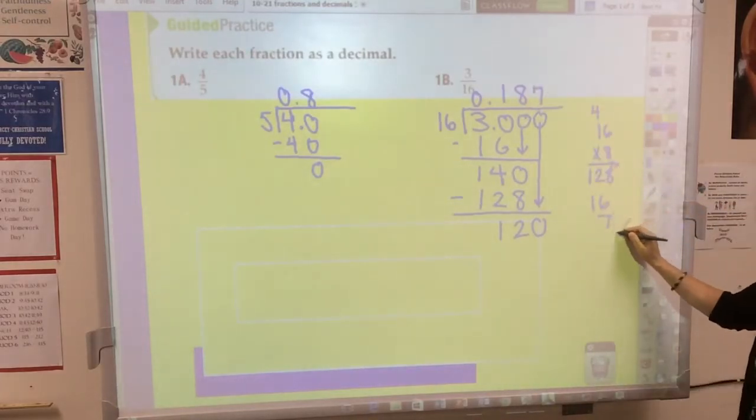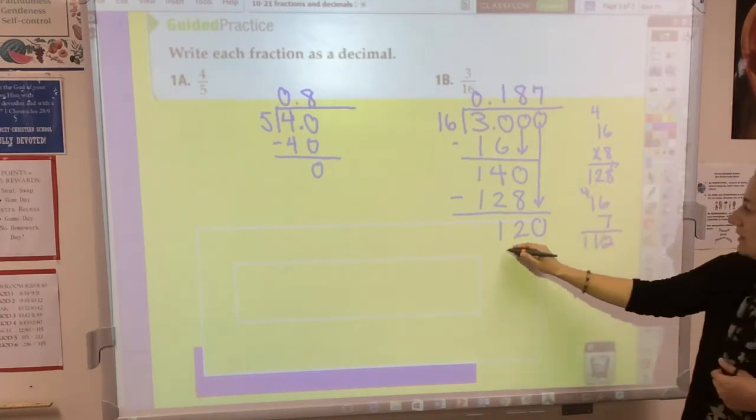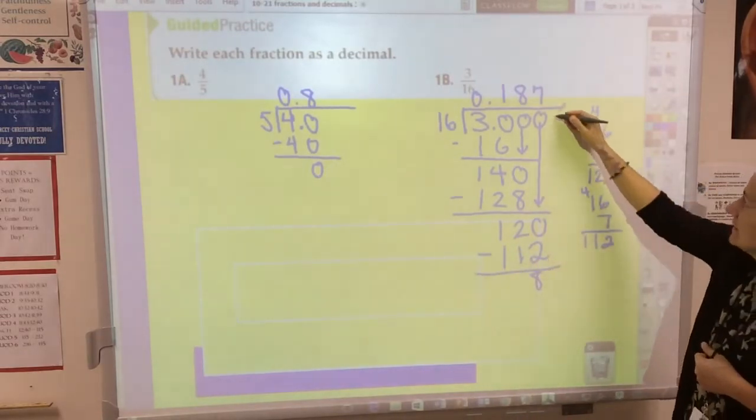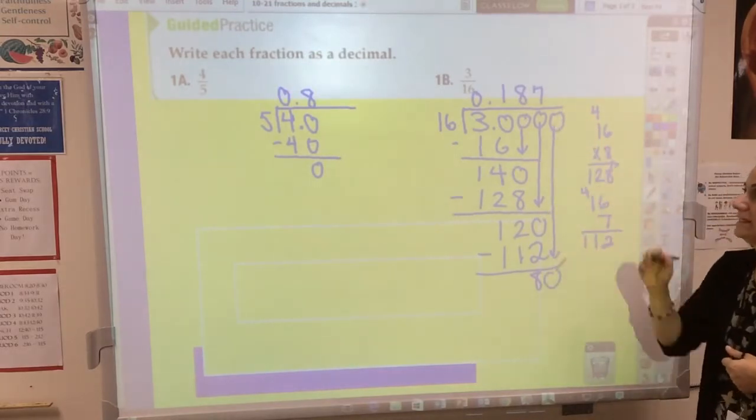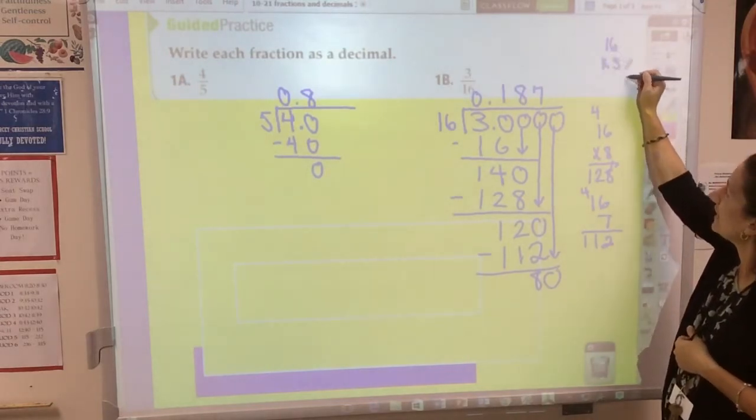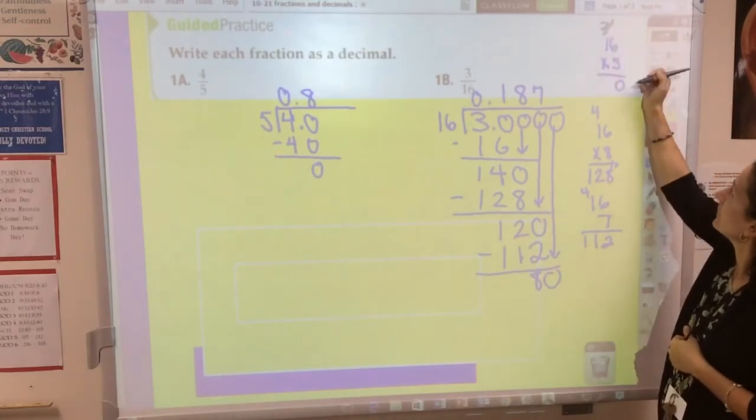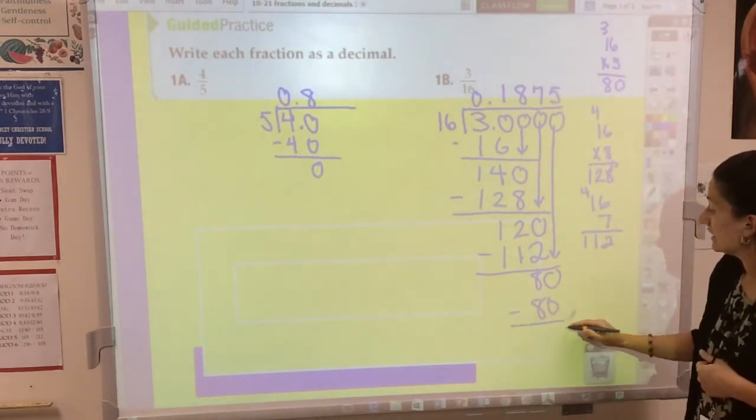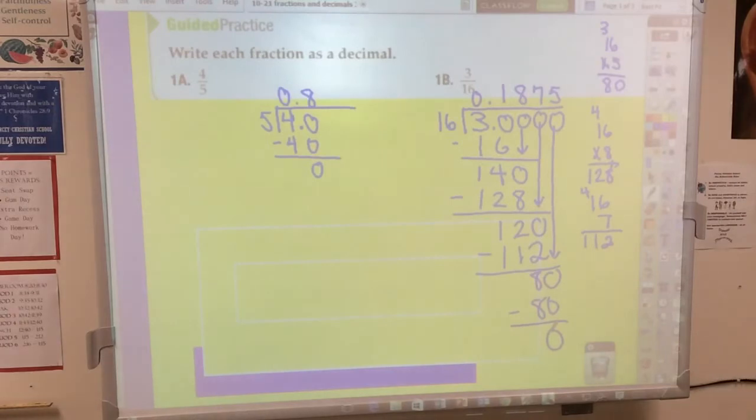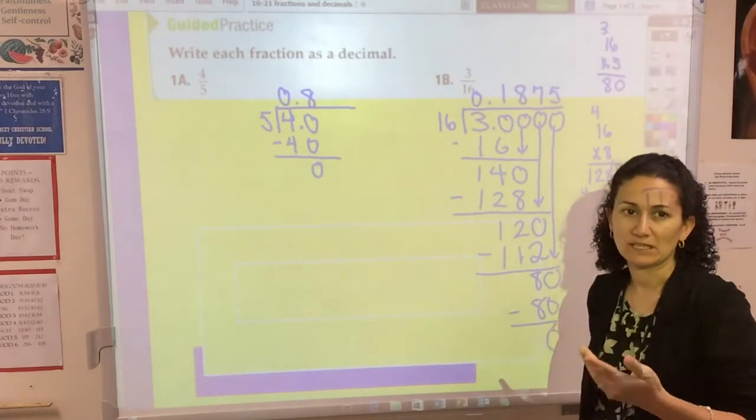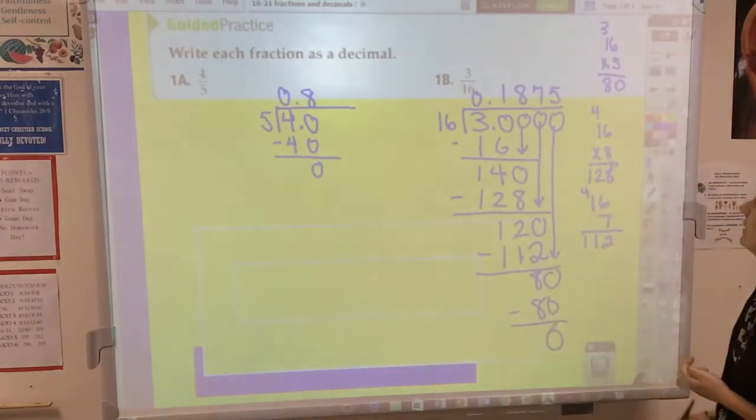I'm going to persevere with it. Now divide 16 into 80. And when you check, 16 times 5 is exactly 80. So this one took a few minutes, but I was able to figure out that it is 0.1875. I hope you saw my methods for dividing. I had to guess and check because I had a two-digit divisor. I don't know my 16 times table, so I had to do a little guessing and checking on the division.